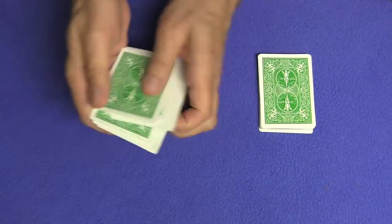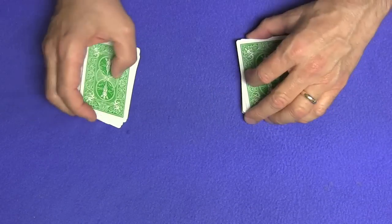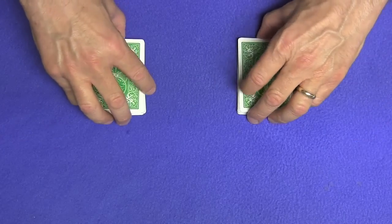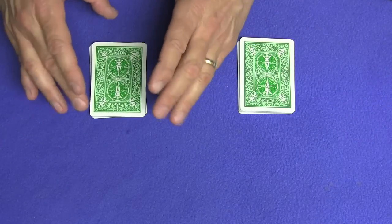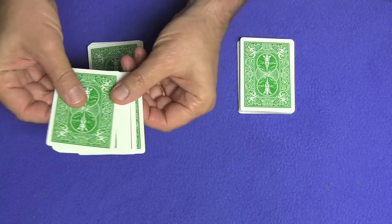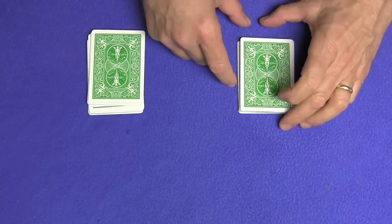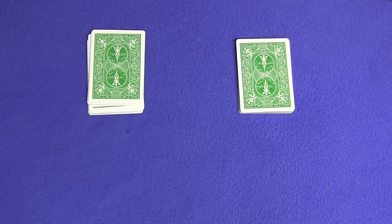The spectator can shuffle one pile, you can shuffle the other pile, then you can switch. It doesn't make a difference. Then you're going to tell the spectator that they're going to be able to select a designated number by choosing an amount of cards from the pile. And however many cards that will be, that will be the number. And then from the other pile, they're going to make a free selection.